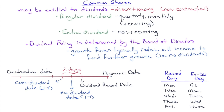The dividend policy of a publicly traded company is determined by that company's board of directors. With growth firms, they typically retain all income to fund further growth, so growth firms usually pay no dividends.